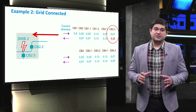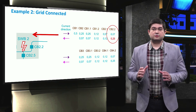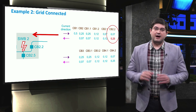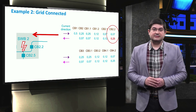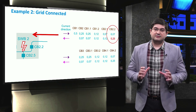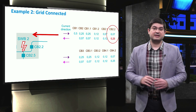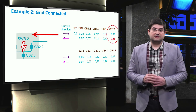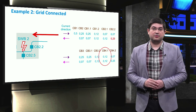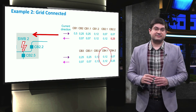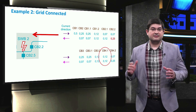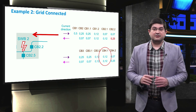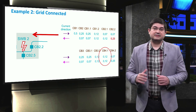During the first fault, the configuration of the grid was changed such that switchboard 2 was connected to switchboard 4. However, the typical time setting of the relays was designed for the first example, where the time setting of switchboard 2 for the fault current from right to left is 0.25 seconds. This value is relatively large, as circuit breaker 2.2 should disconnect faster. If circuit breaker 4.2 does not trip, then circuit breaker 4.1 will trip within 0.12 seconds, which is faster than circuit breaker 2.2. As a result, switchboard 4 is inappropriately disconnected from the grid.